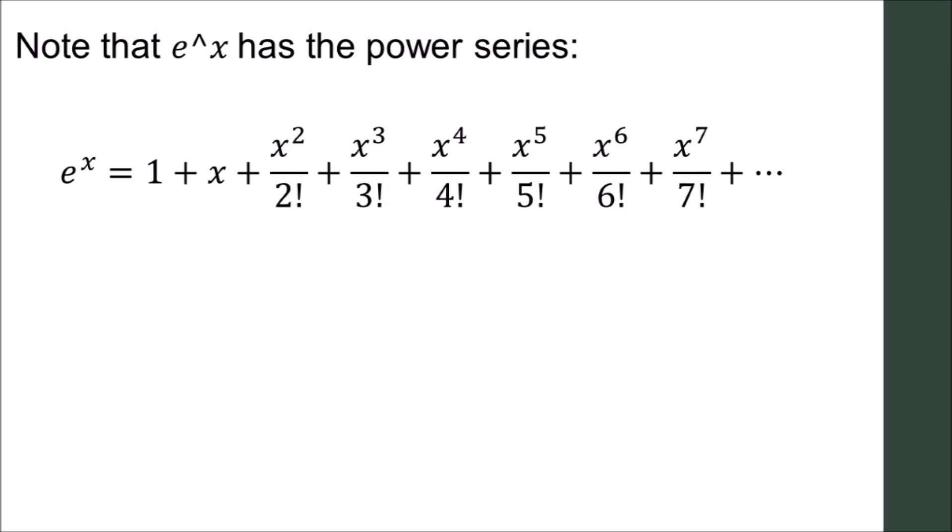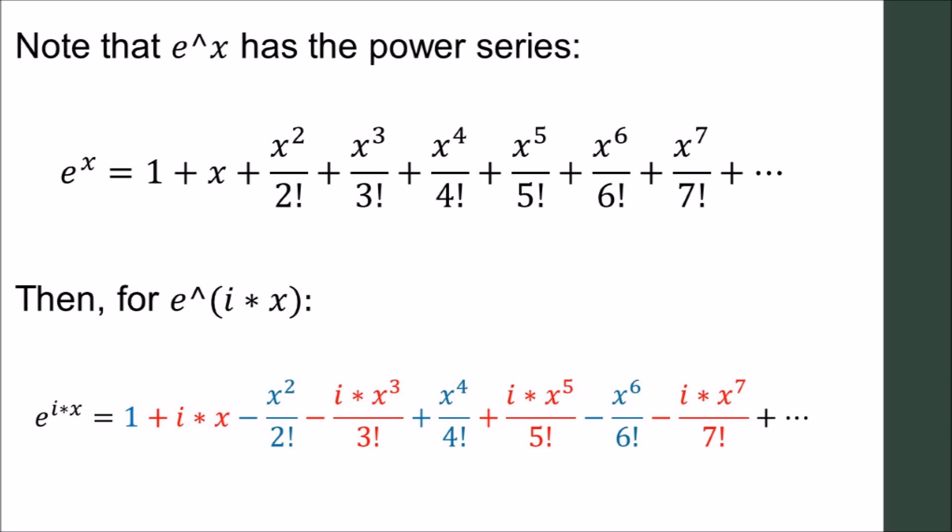Let's start with representing e to the x as an infinite power series. e to the x is equal to 1 plus x plus x squared over 2 factorial plus x cubed over 3 factorial, and so on. The next line shows the power series expansion for e to the i times x. Recall that i represents the square root of negative 1. All the terms that do not have i are in blue, and all the terms containing i are in red.